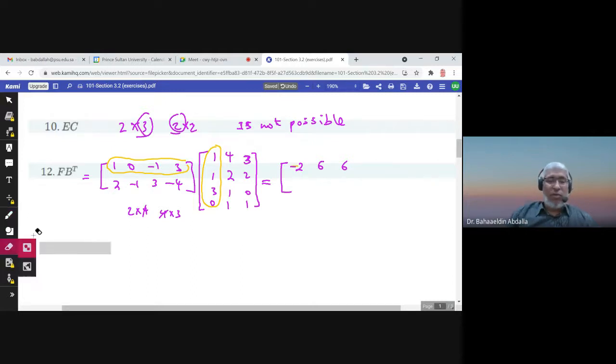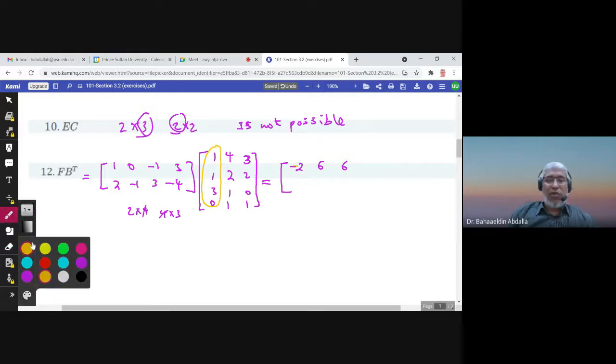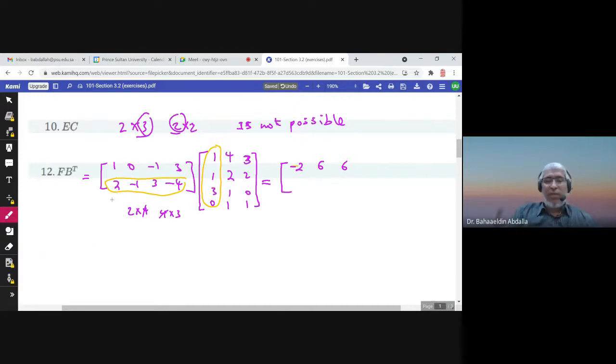Now the second row. The second row by the first column: 2 times 1, negative 1 times 1, 3 times 3, negative 4 times 0. Add all of these numbers, you get 10. The second row times the second column: 2 times 4, negative 1 times 2, 3 times 1, negative 4 times 1, that's 5. 2 times 3, negative 1 times 2, 3 times 0, negative 4 times 1, that's 0. So this is the matrix F times B transpose.